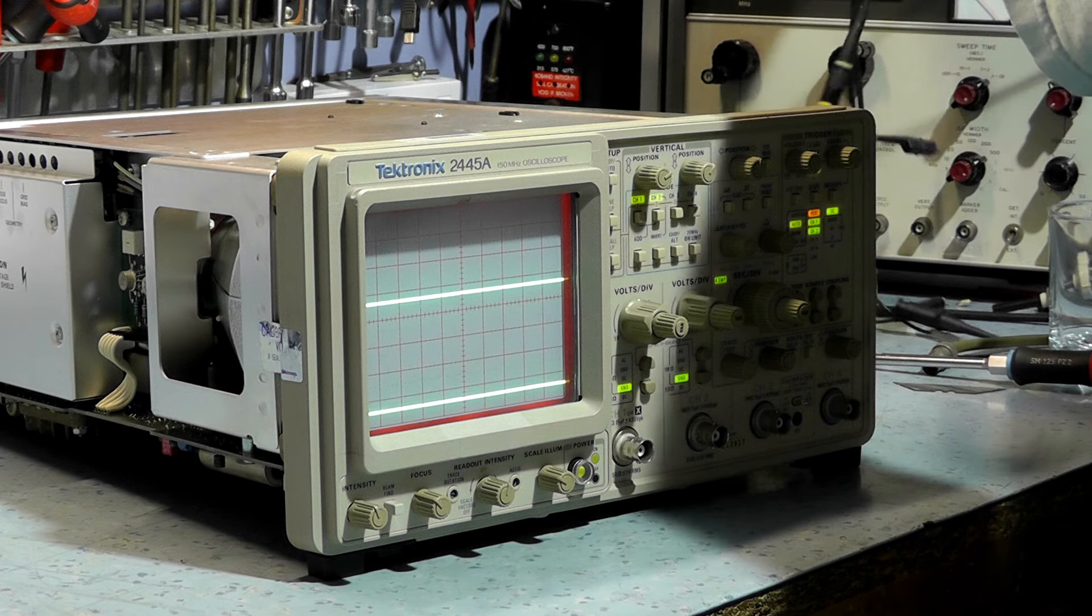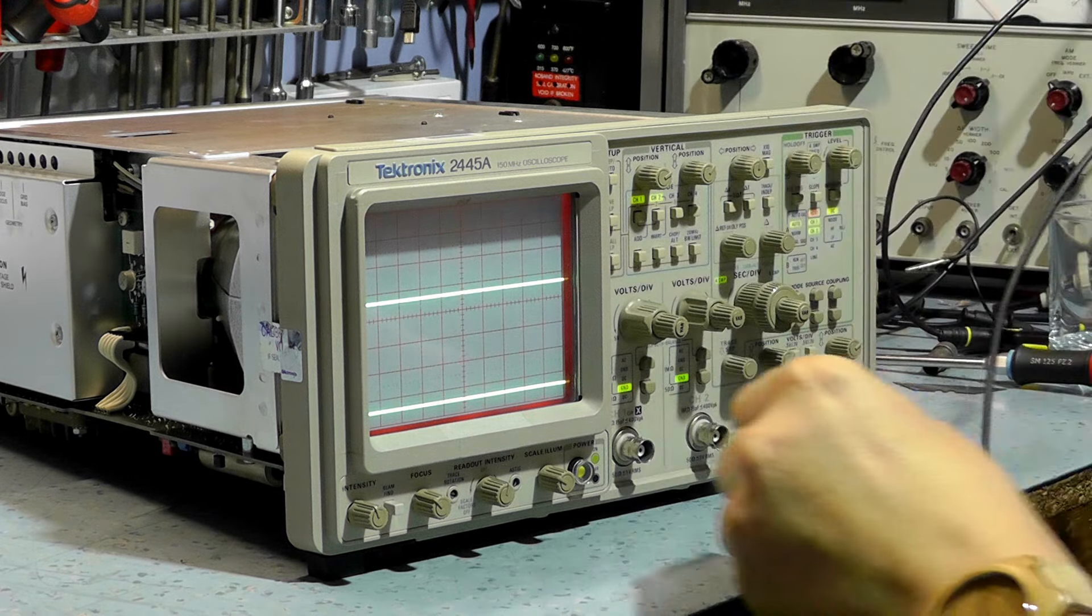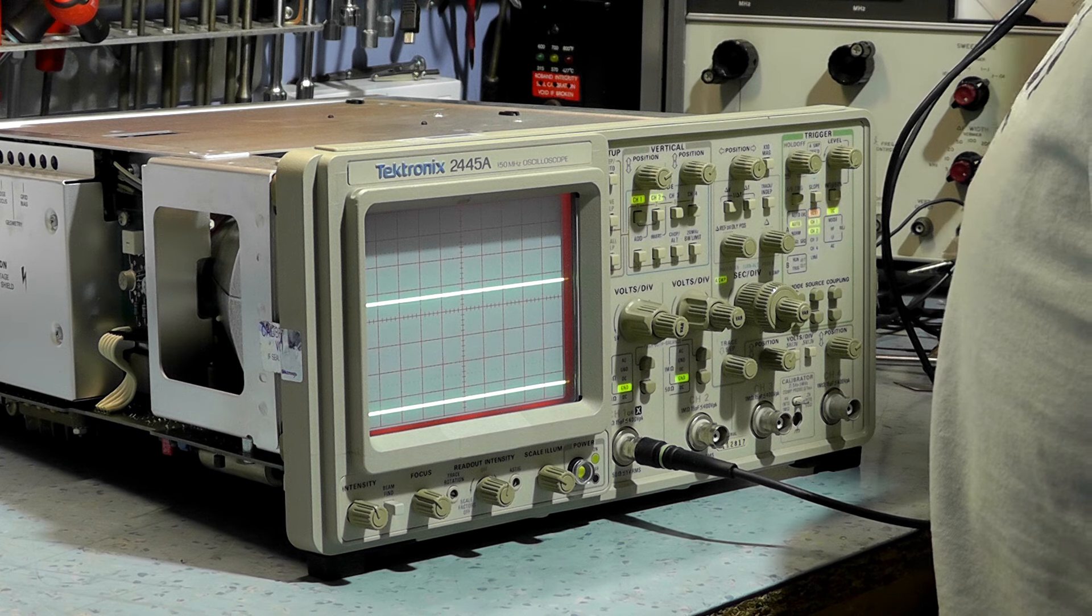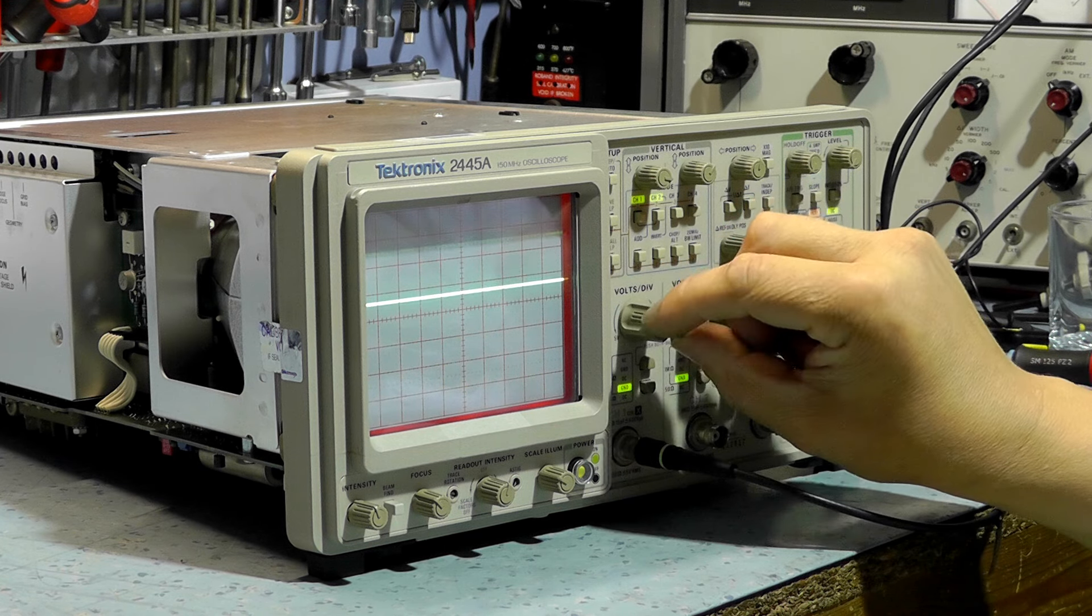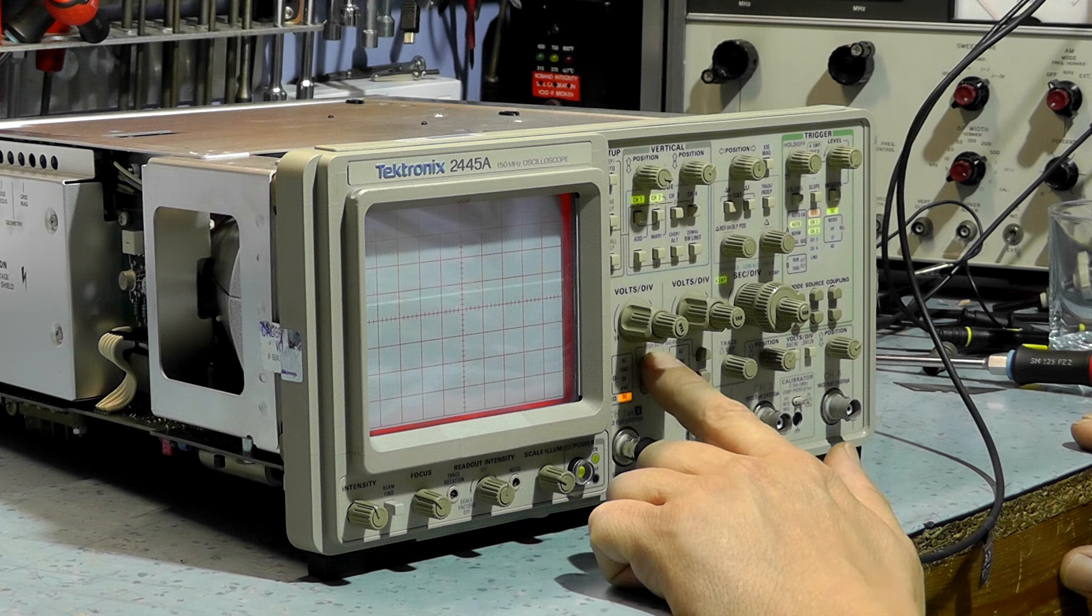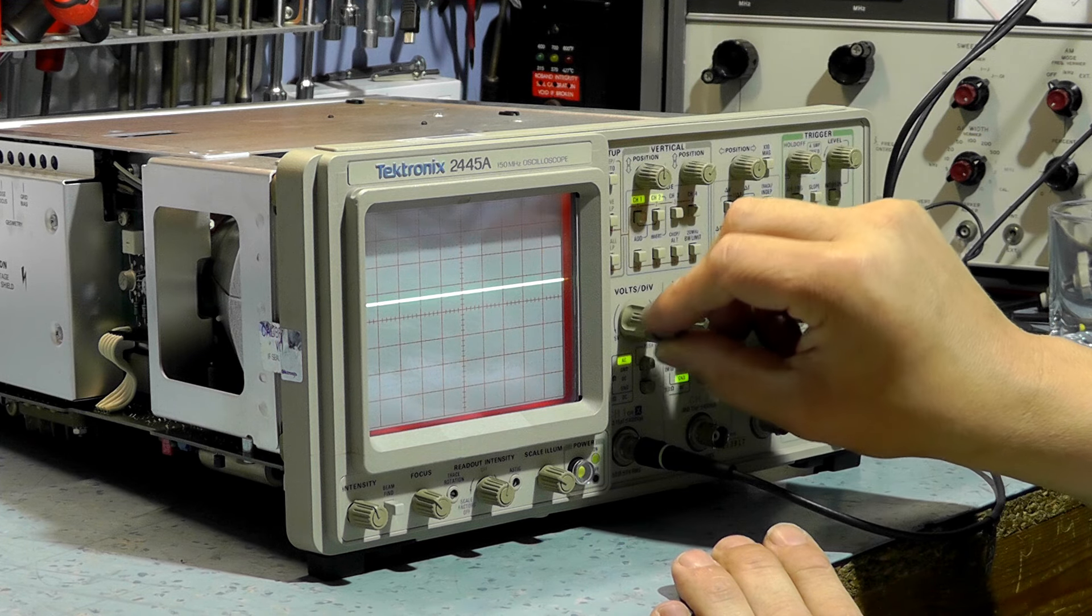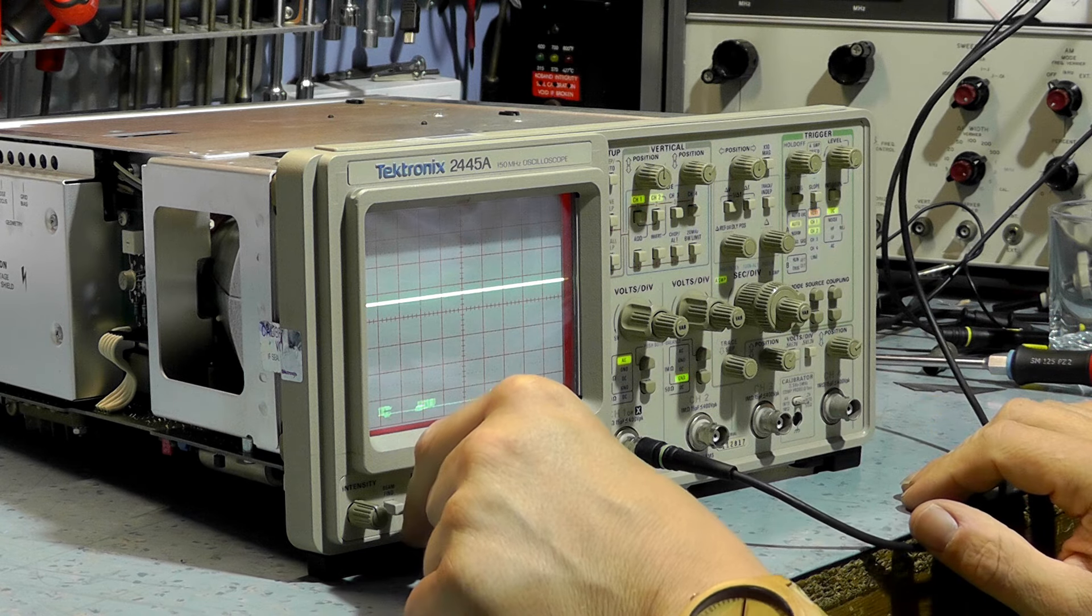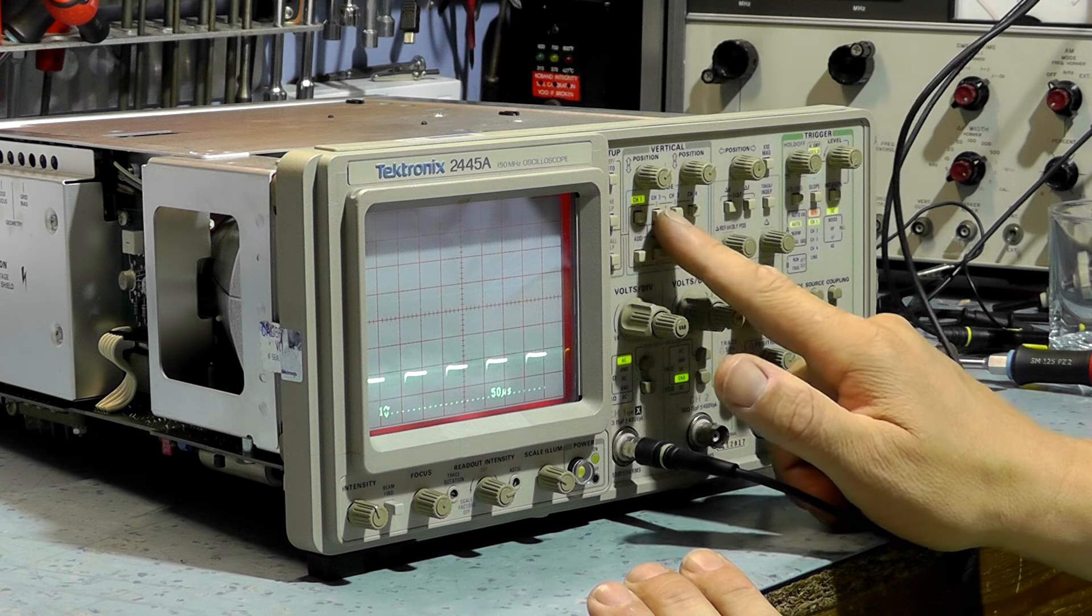Let's see what we've got. Oh, it's grounded, so I won't see anything. It's got 50M input as well. That's nice. Let's go AC. Channel 1's grounded. Oh, there's a waveform.